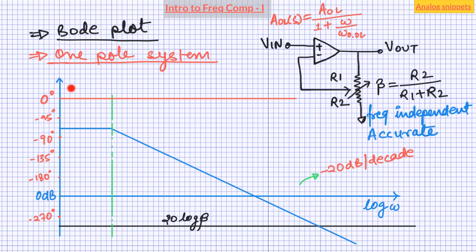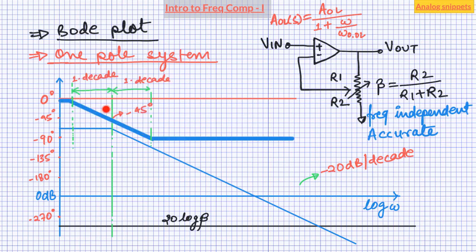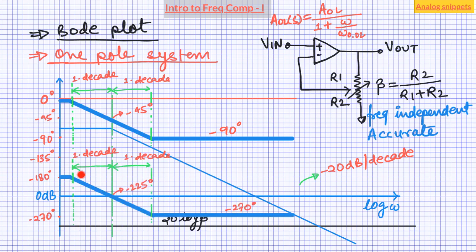A frequency independent beta will always have a 0 degree phase. The forward gain with one pole in the left half plane will have a minus 90 degree phase shift. But unlike the asymptotic gain plot which bends suddenly at the pole location, the phase will change over two decades of frequencies, with the total phase shift at the pole frequency being minus 45 degrees. Coming to the phase plot of the loop gain, it will also have a total minus 90 degree phase shift. While drawing the phase plot of the loop gain, we also take the negative sign into account, which means the phase plot of the loop gain starts at minus 180 degrees. Since minus 180 degrees is the same as plus 180 degrees, this plot can also be drawn starting from plus 180 degrees.